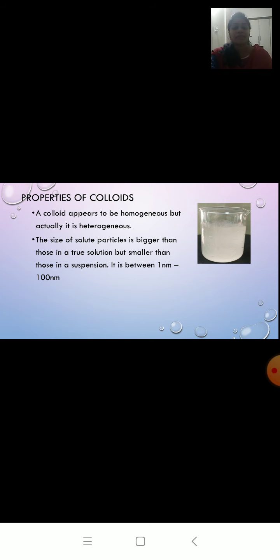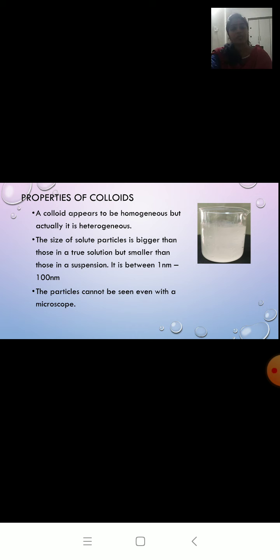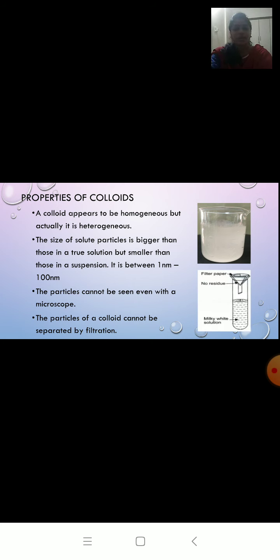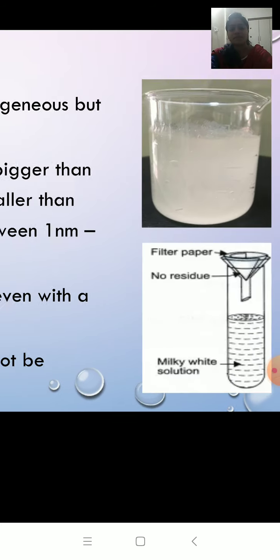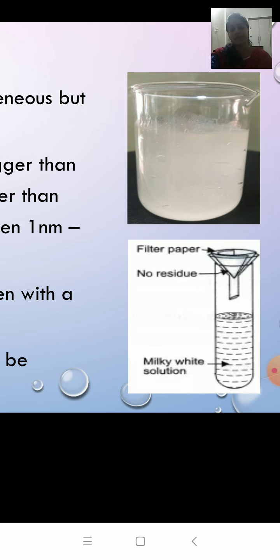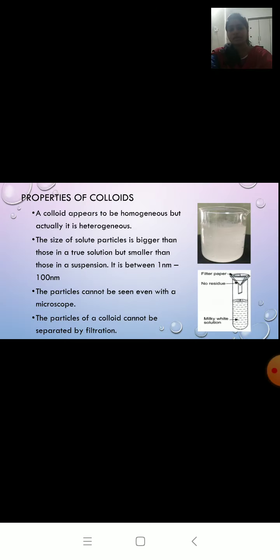The size of solute particles is bigger than those in a true solution but smaller than those in a suspension — somewhere between 1 nanometer to 100 nanometer. So the size of solute particles is intermediate: bigger than solution but smaller than suspension. The particles of solute cannot be seen with a microscope. Also, the particles of colloid cannot be separated by filtration — if you filter the soap solution, the whole solution passes through the filter paper and no residue is left.